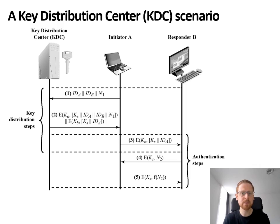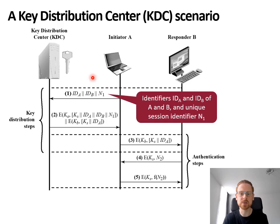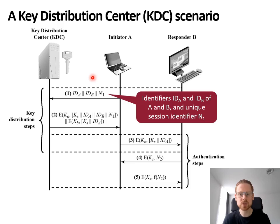A will start by sending a request to the KDC. This request contains the identifier of A, the identifier of B, and a randomly generated nonce. The nonce acts as a unique session identifier. It should be hard to guess by an attacker — for example, a random value works really well. And it should also be different for every session. This is to avoid replay attacks, where an attacker intercepts the message and resends it to the key distribution center later on.